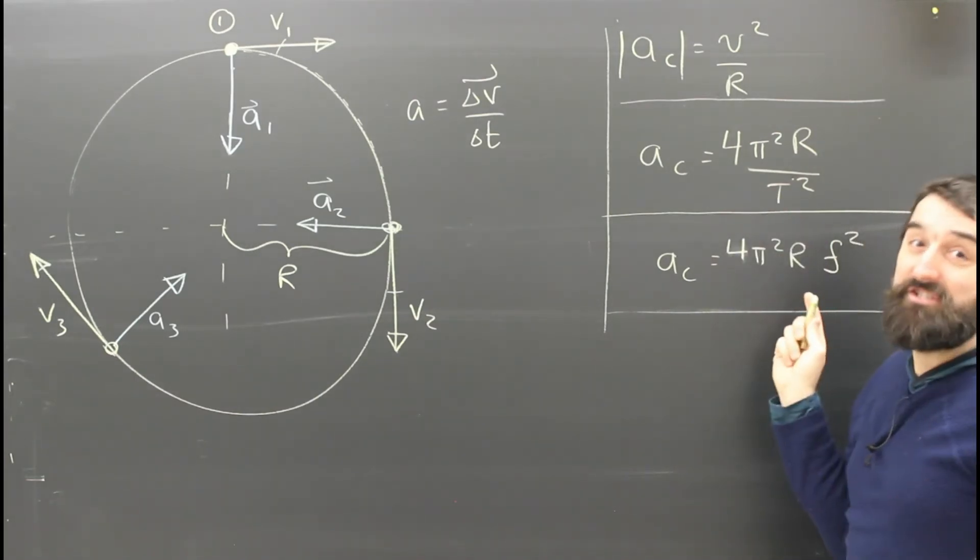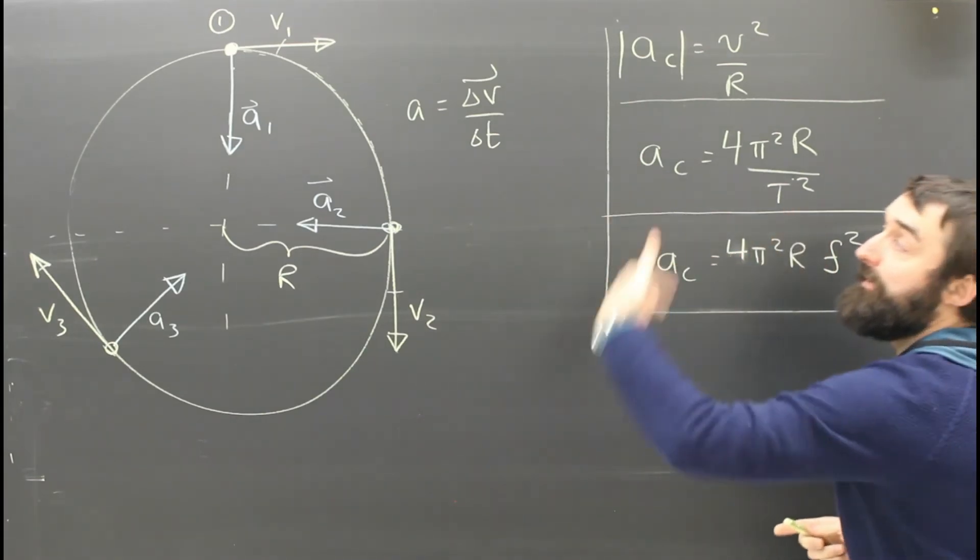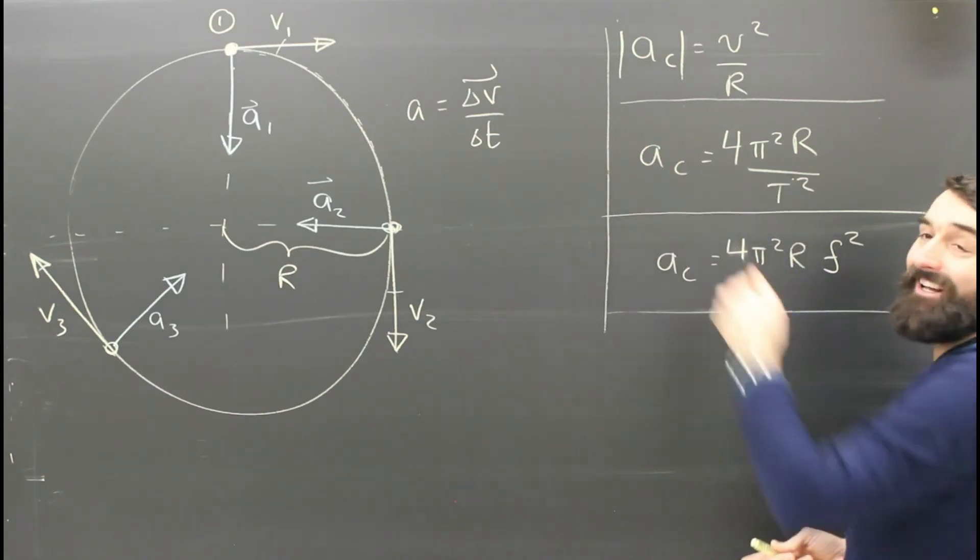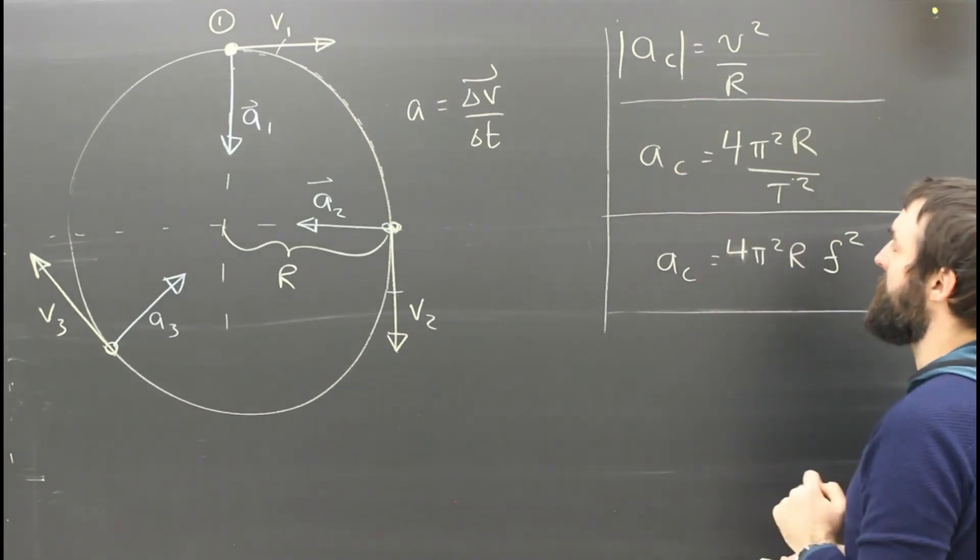At the end of the day though, you just want to memorize that formula. If I tell you the period of the object's circle, how long it takes to do a loop, then you can calculate the centripetal acceleration required using this formula.